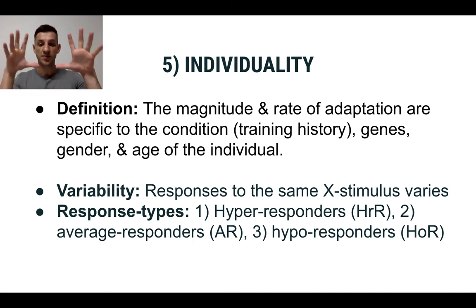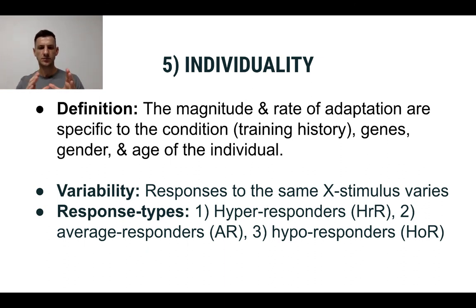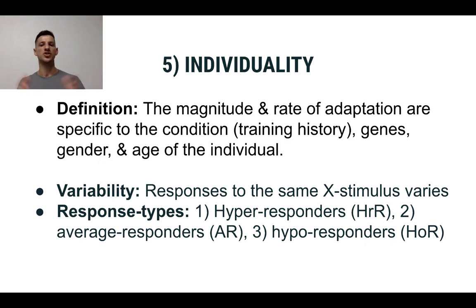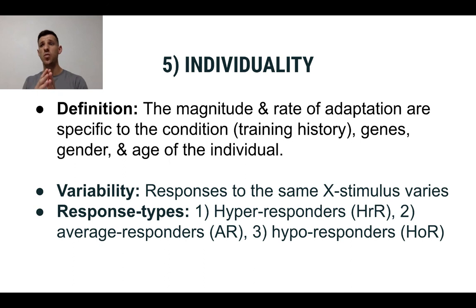However, we don't have all the time in the world to give every program a year to see how you respond. You will have to use basic logic to guide your decisions. There are three types of responders: you're either going to be an average responder, which means for a three-month strength training program, the average person will pick up two to three kilograms of muscle and improve strength by 25 to 30% as a beginner. Then you get people who are hyper responders — they pick up four kilograms of muscle or improve by 50%.